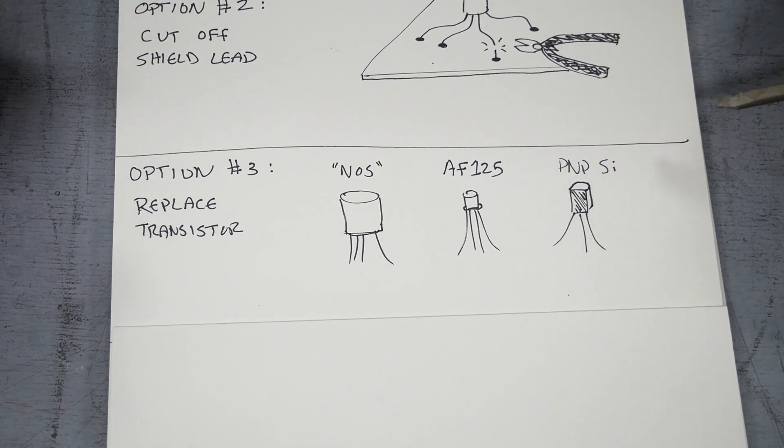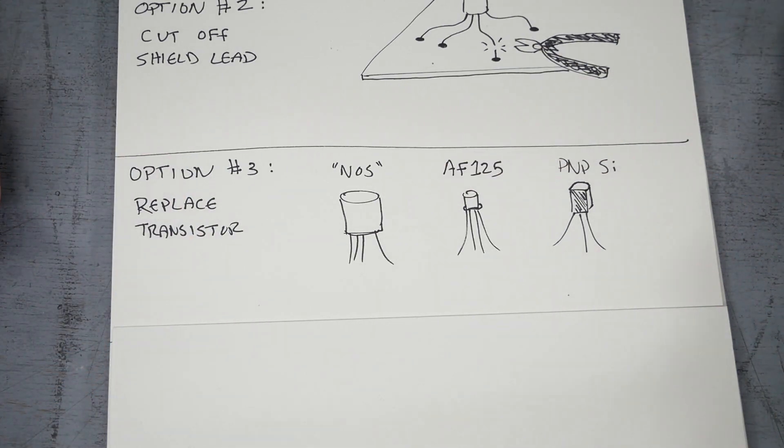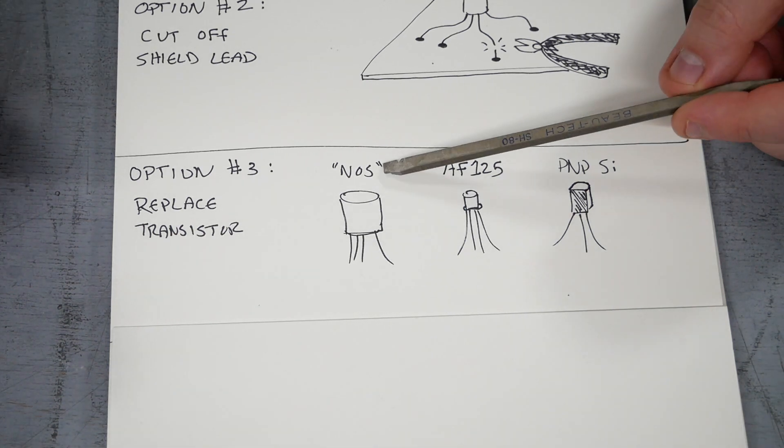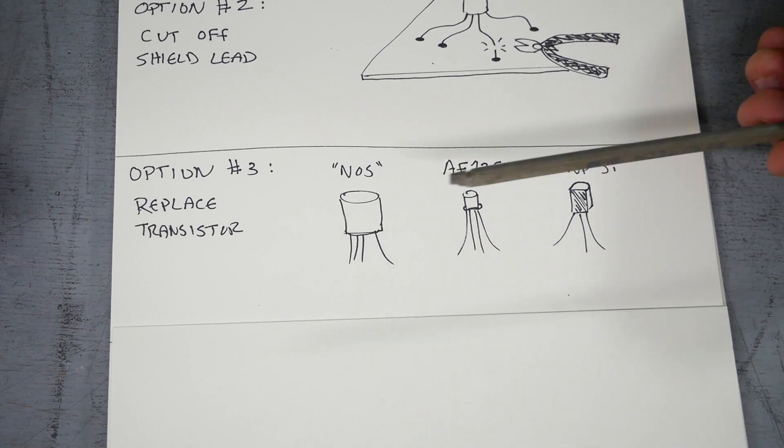So option three is maybe the next slot, which is to replace the transistor. And this can be done. You can go for a new old stock transistor of the same type, just pop in a new transistor. Problem with that is that these whiskers have been shown to not necessarily be affected by use. What I mean by that is that new old stock transistors sitting on a shelf or in a bag, there's no reason to believe they won't have the whiskers.